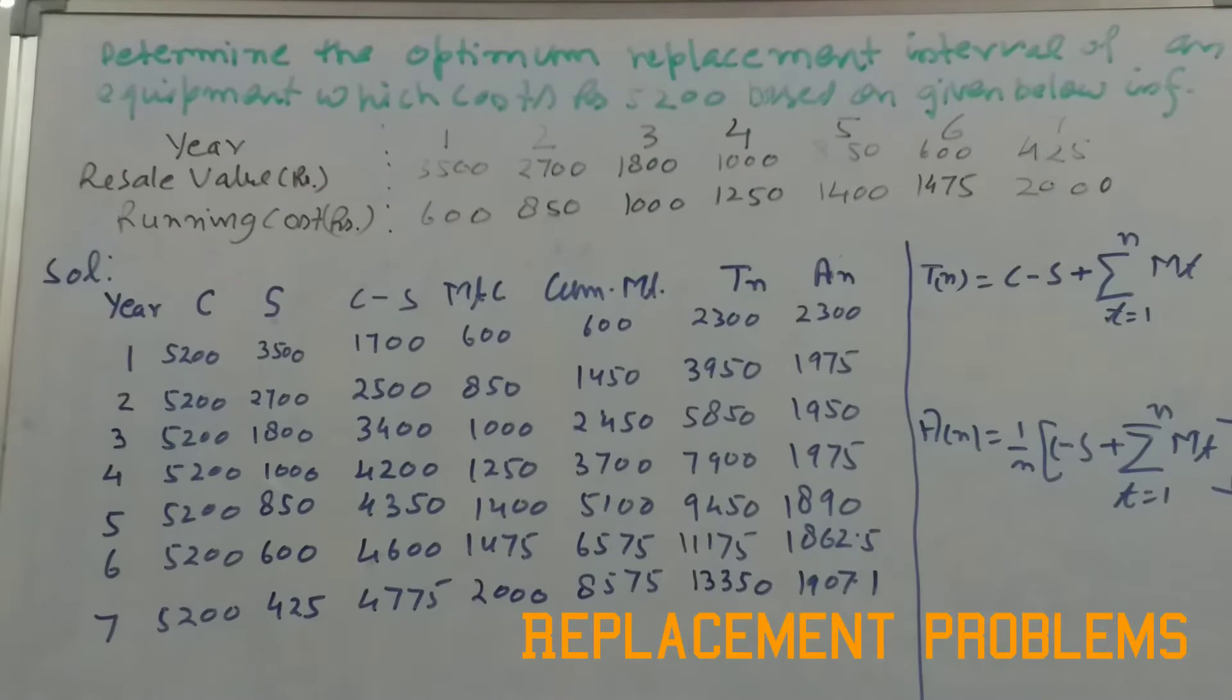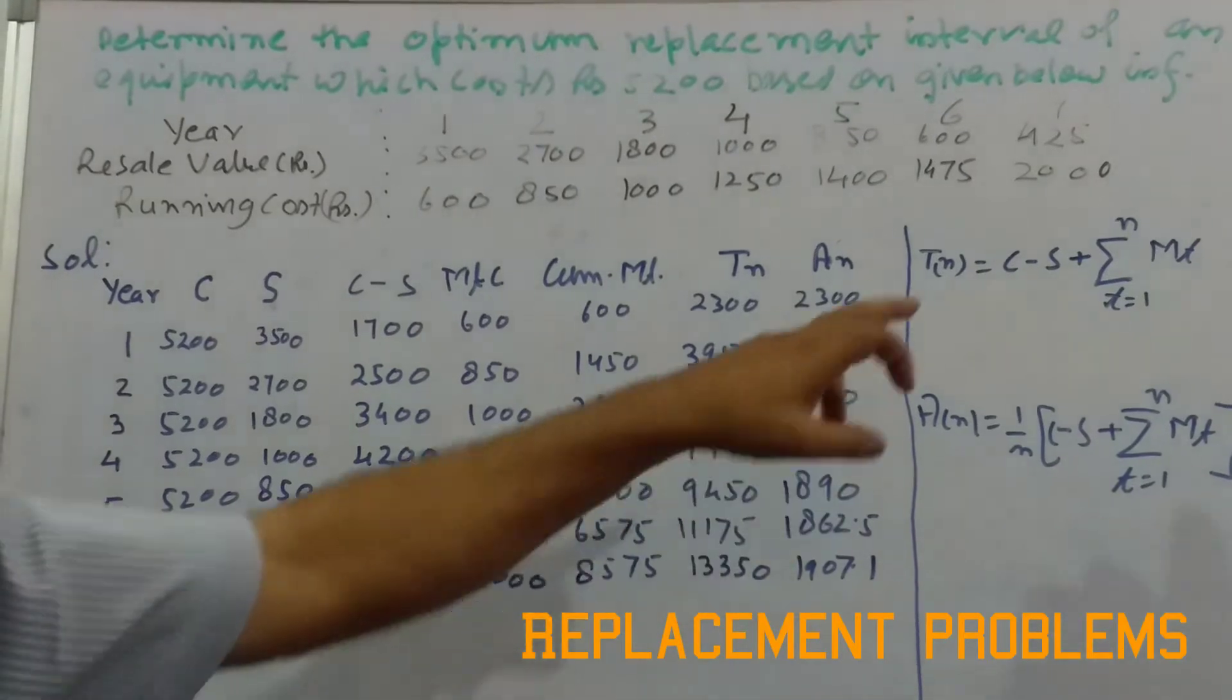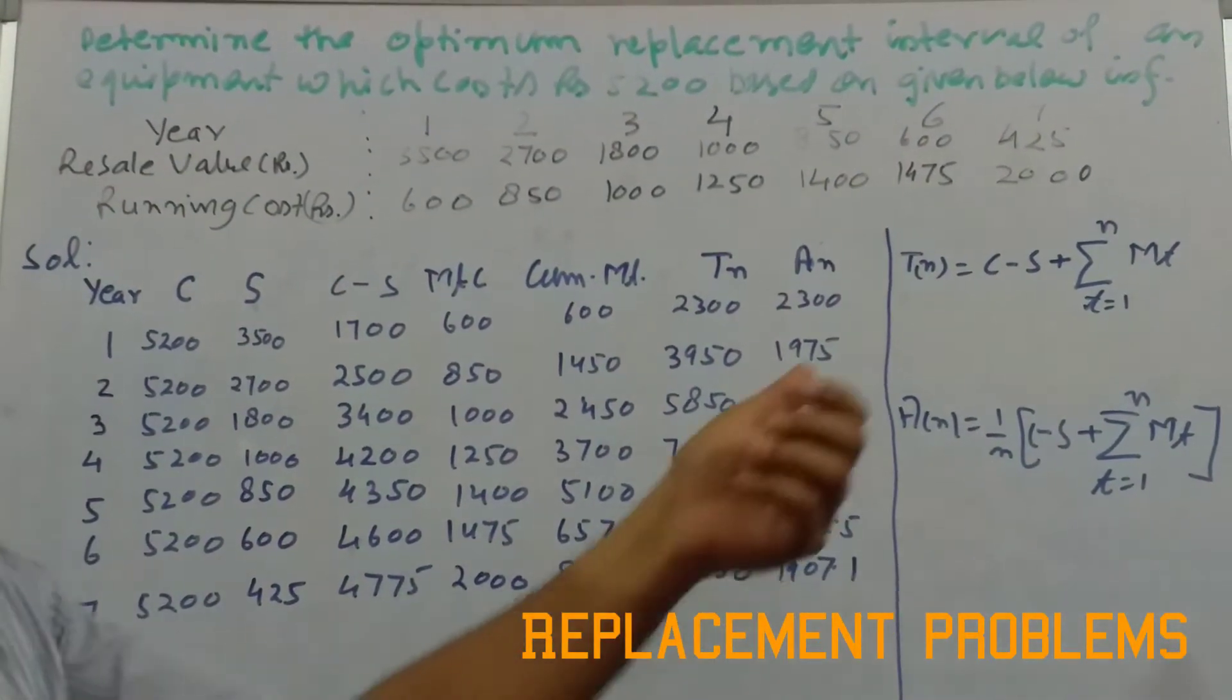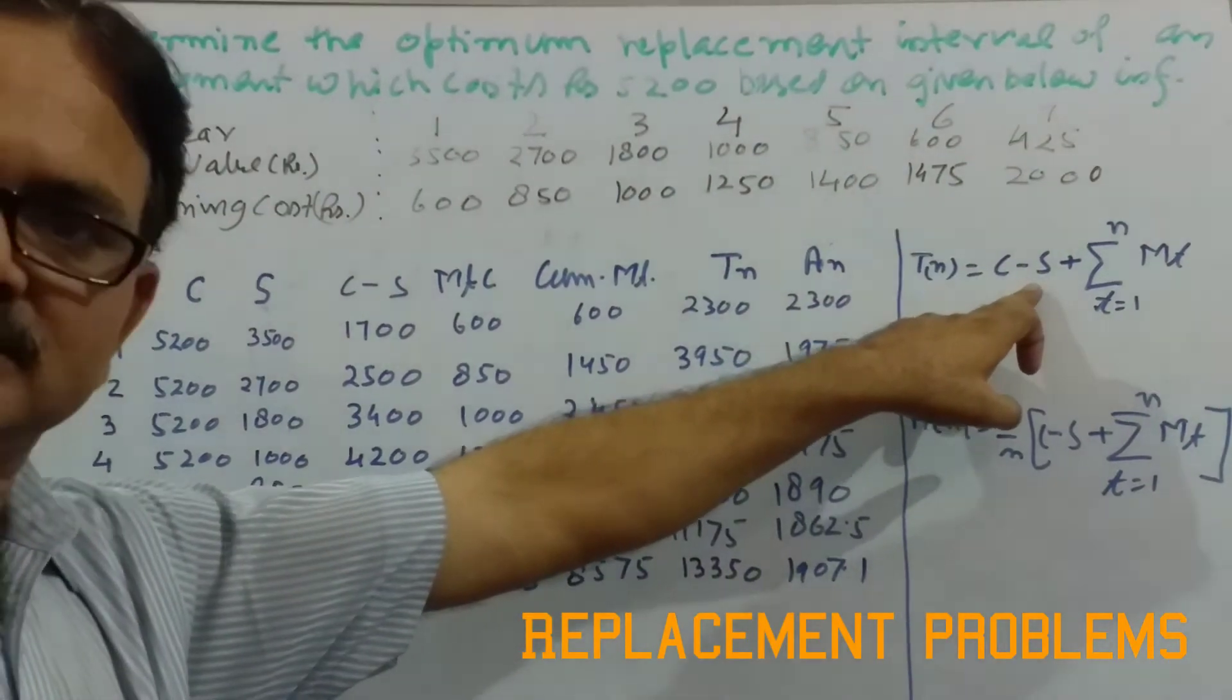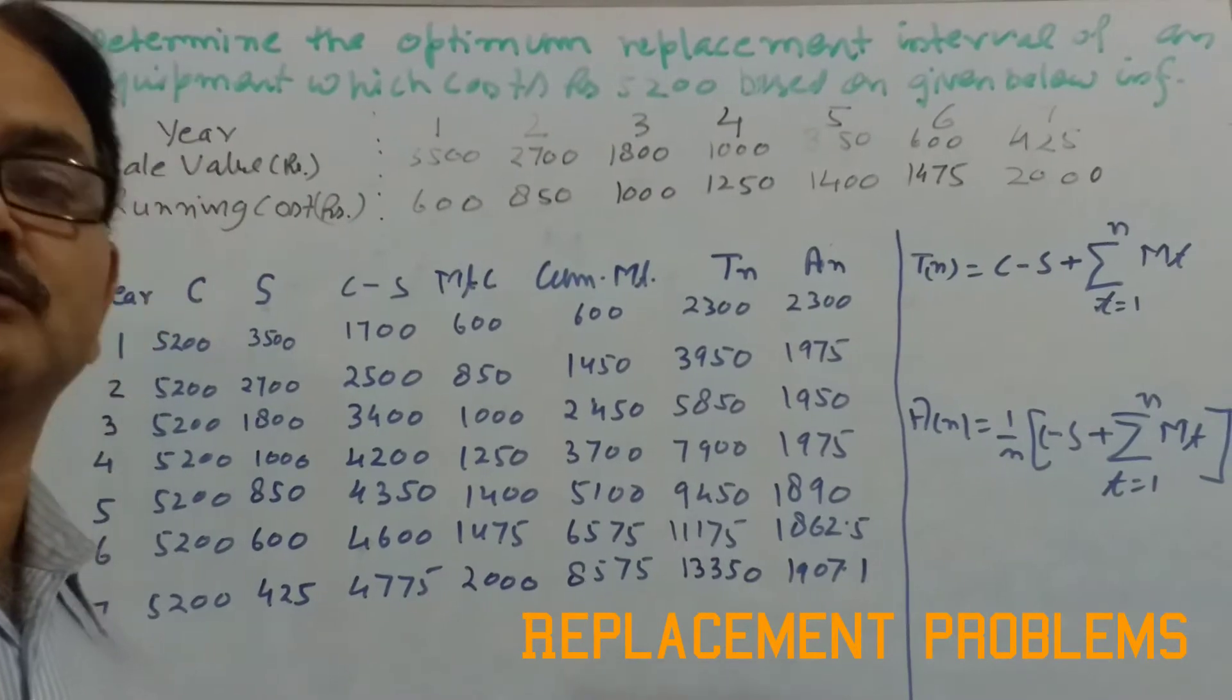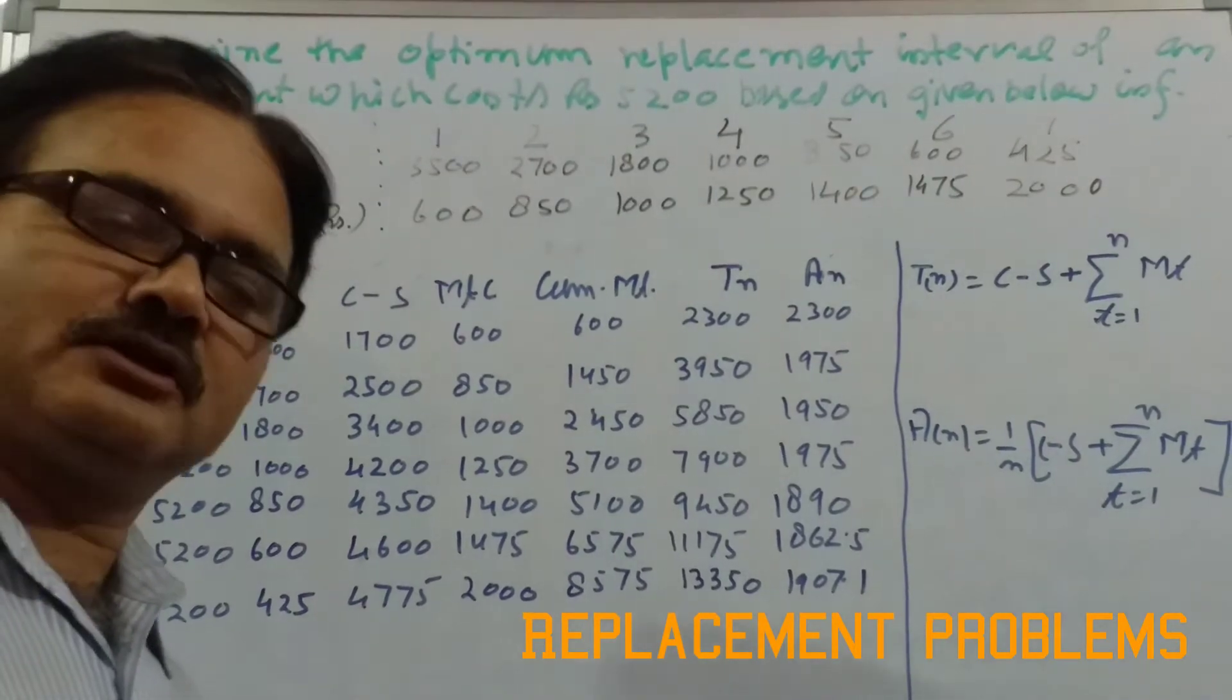Normally, three elements are involved in calculating the replacement interval for a particular machine or equipment. One is the purchase cost of the equipment that we normally denote by C. Then, salvage value or the cost of that particular equipment or machine after N years, denoted by S, because normally the equipment or machine deteriorates. So it depreciates, the value of the machine also depreciates. So this is why it is subtracted from the purchase value, and year on year maintenance cost is also added.